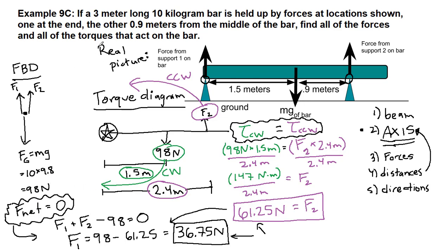And it says to find all of the torques. We've drawn in the torques, and each of the two torques, based on the axis that I chose, would be 147 newton meters. We will see plenty more examples.